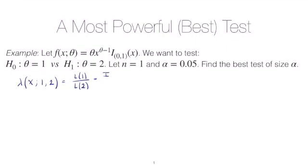Under the null, you just have the indicator over 0 to 1. And under the alternative, you have 2x times that indicator. So we're left with 1 over 2x.